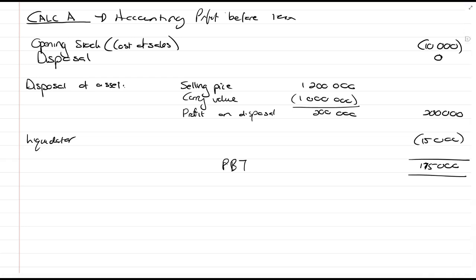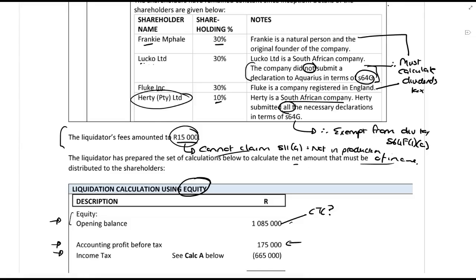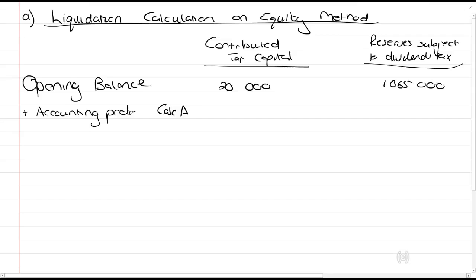That's nothing here. Over here, we have the liquidators fees of 15,000. For accounting, that's an expense. So, if you add all of this up, you get 175,000 profit before tax. So, that's basically how we calculated that 175,000. For our calculation now, this is our liquidation calculation. We now go and add that to your reserves. It's not contributed tax capital. Contributed tax capital is the amount that you receive for issuing shares.